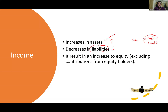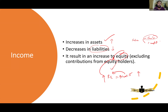Income also results in an increase to equity, excluding contributions from equity holders. Here equity means retained earnings, and retained earnings means profit. So if there is income, income will increase profit. If profit increases, it will increase retained earnings. If retained earnings increase, it will cause an increase to equity. So income means increase in asset, decrease in liability, and increase in equity.